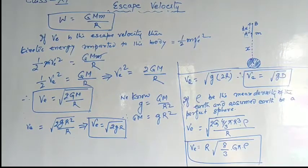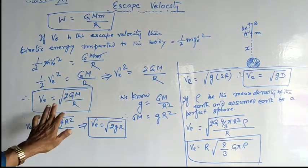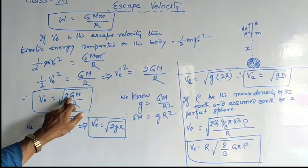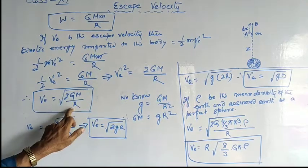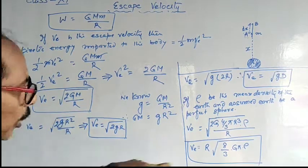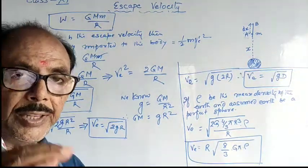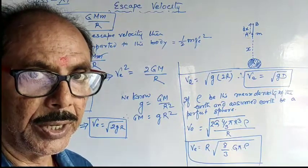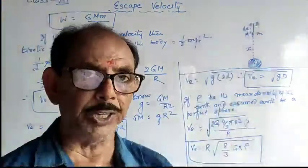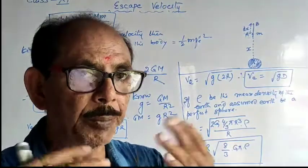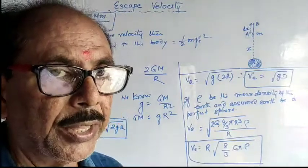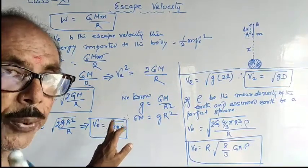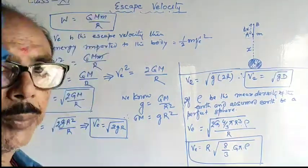From these equations we can see that the escape velocity is independent of the mass of the body being thrown. That means the escape velocity does not depend on the mass of the object thrown upward — it only depends on the mass and radius of the planet or surface from which it is thrown.